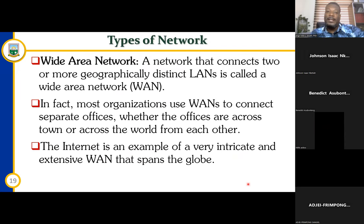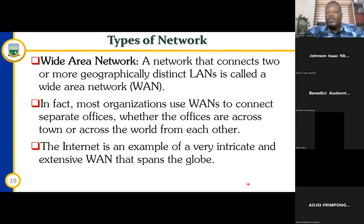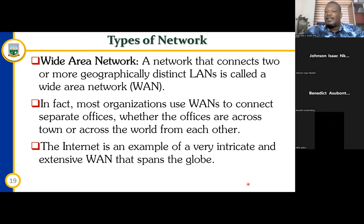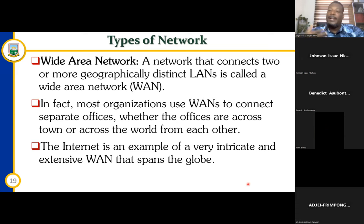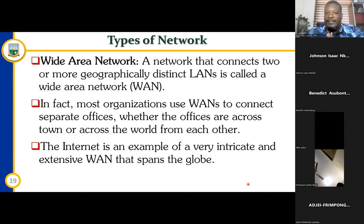When we talk about a wide area network, it's a network that connects two or more geographically distinct LANs. Most of the time we call it WAN. So the metropolitan area — in the example I gave, UMAT has a local area network and Esikado has a local area network — those are two different places. If they are in a metropolitan area, we can call it a metropolitan area network; sometimes we can also term it a wide area network, because they are at two geographically different locations.